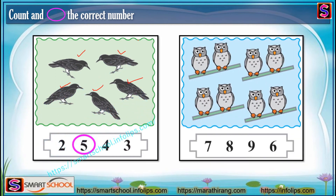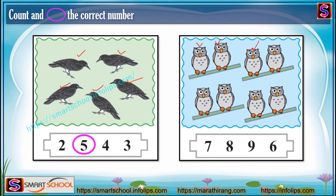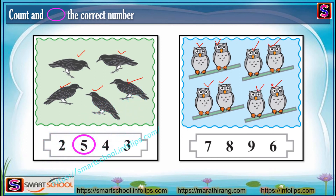This is one more. Who is here? An owl — it's blue. Count the number: one, two, three, four, five, six, seven, eight. Circle the number eight.